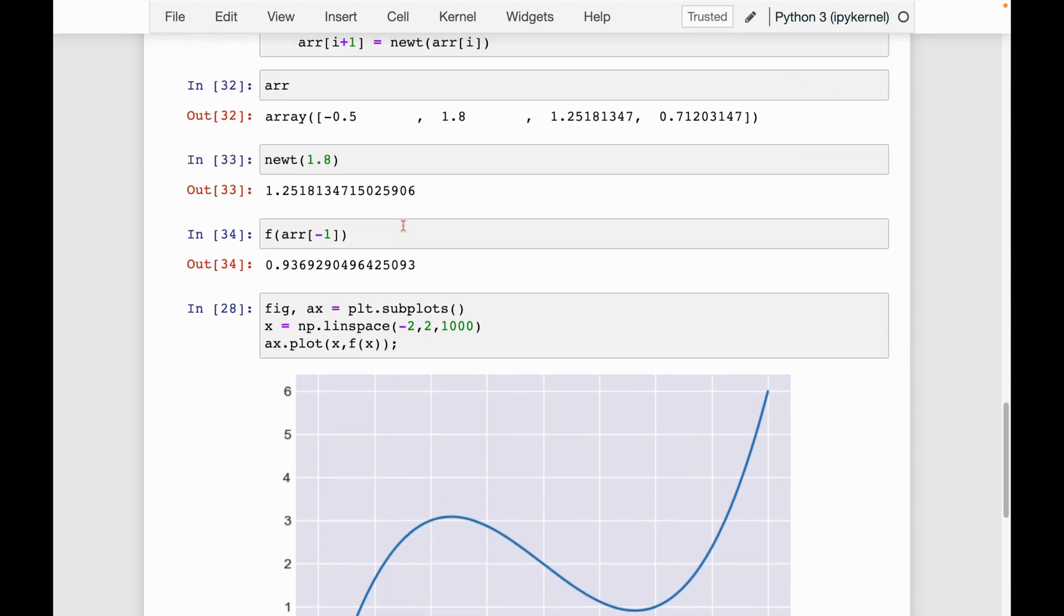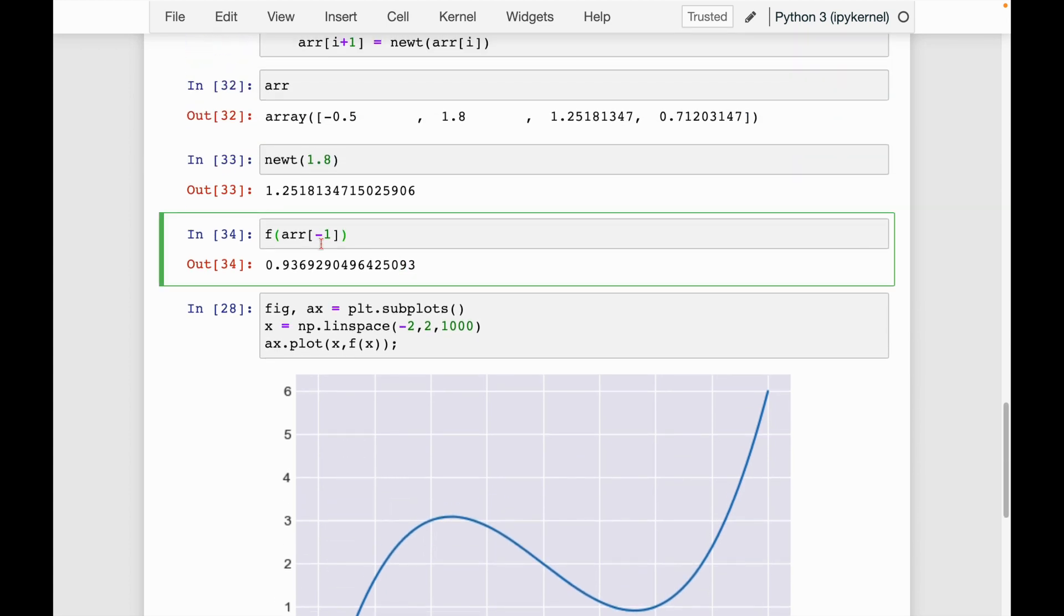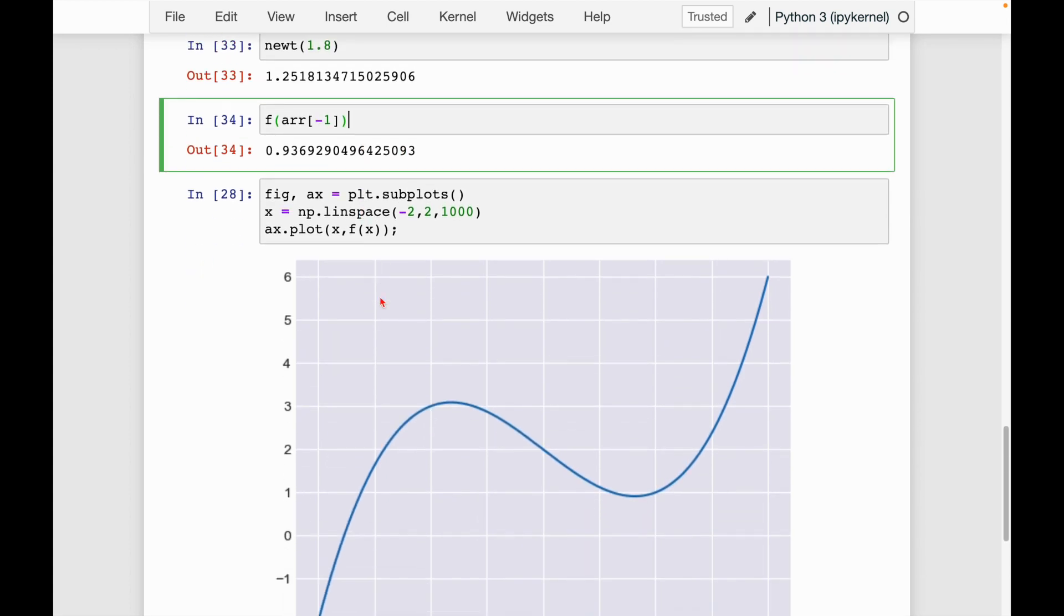Let's kind of visualize what's happening. So what's happening here is we're starting at negative 0.5. So we can imagine, let's draw the tangent line.